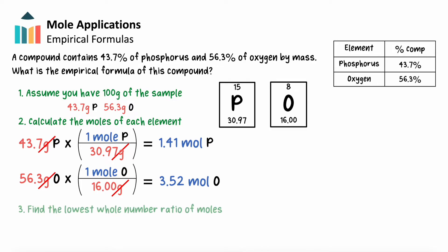Finally, we'll take these molar values and find the lowest whole number ratio. This last step can feel the most complicated. A simple trick is to divide each value by the lowest moles you have available. In this case, that would be the 1.41 moles of phosphorus. Doing this gives us a 1 to 2.5 mole ratio between phosphorus and oxygen.